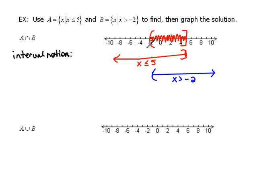Remember, we're starting here on the left with a parenthesis at negative 2, and then we're going all the way over here to 5, and that has a bracket on it. So our interval notation looks like this.